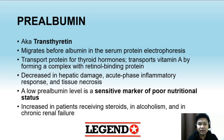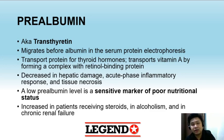Prealbumin can be decreased in hepatic damage, acute phase inflammatory response, and tissue necrosis. It may be increased in patients receiving steroids, in alcoholism, and in chronic renal failure.